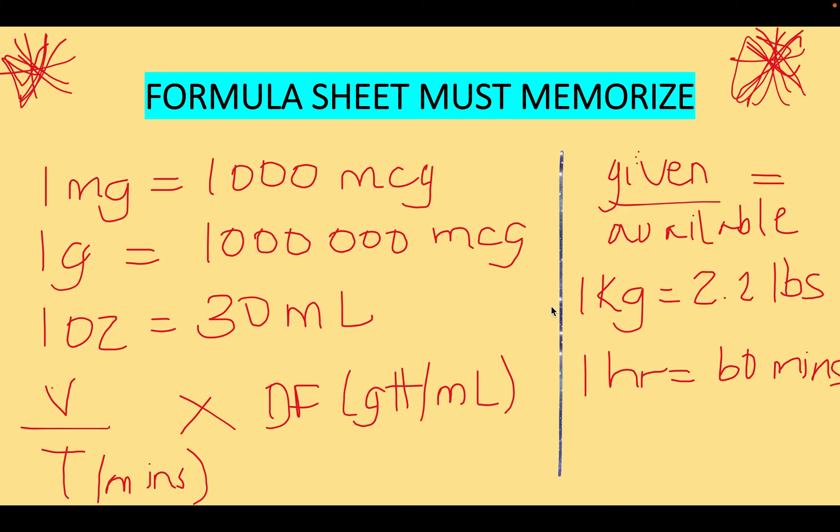Here is a formula sheet you must memorize to be successful on the HESI dosage calculations exam: 1 mg equals 1000 mcg; 1 gram equals 100,000 mcg; 1 ounce equals 30 ml; drop rate formula is volume over time in minutes multiplied by the drop factor; 1 kg equals 2.2 lb; 1 hour equals 60 minutes. As you practice 10 to 20 questions every day, add formulas and conversions to your sheet so that when exam day arrives, you'll have memorized everything you need.